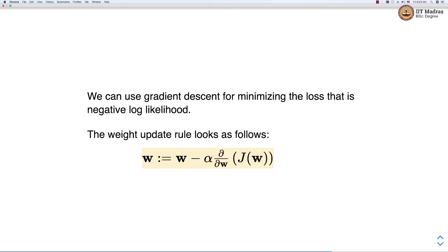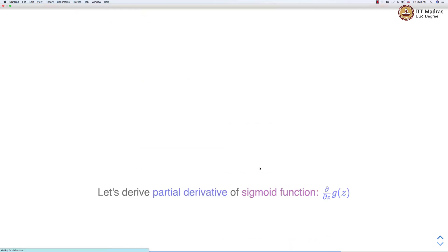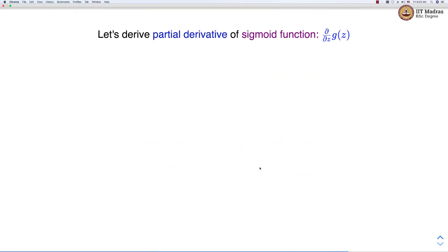The weight update rule looks like the following: the new value of the weight vector is set to the old value minus alpha, which is the learning rate, times the partial derivative of the loss function with respect to the weight vector. We will first calculate the partial derivative of the sigmoid function.